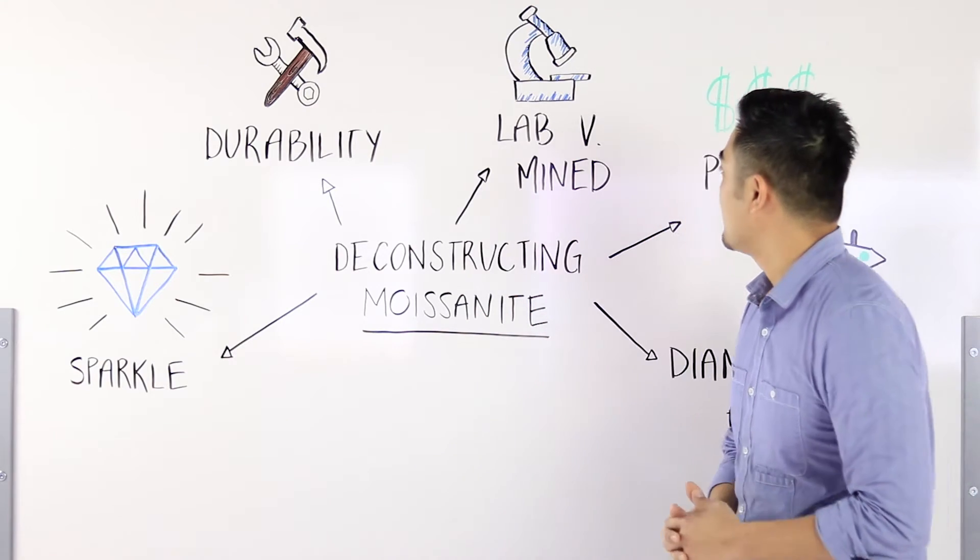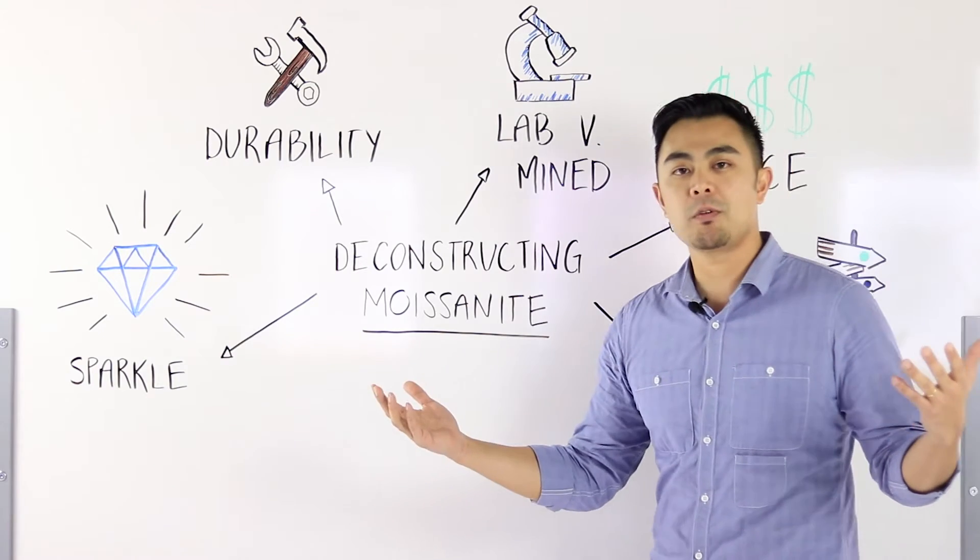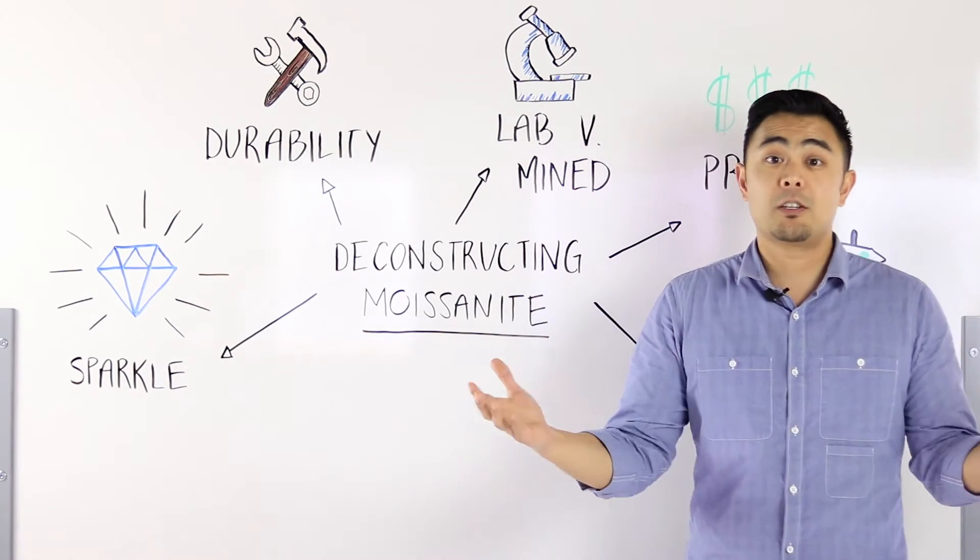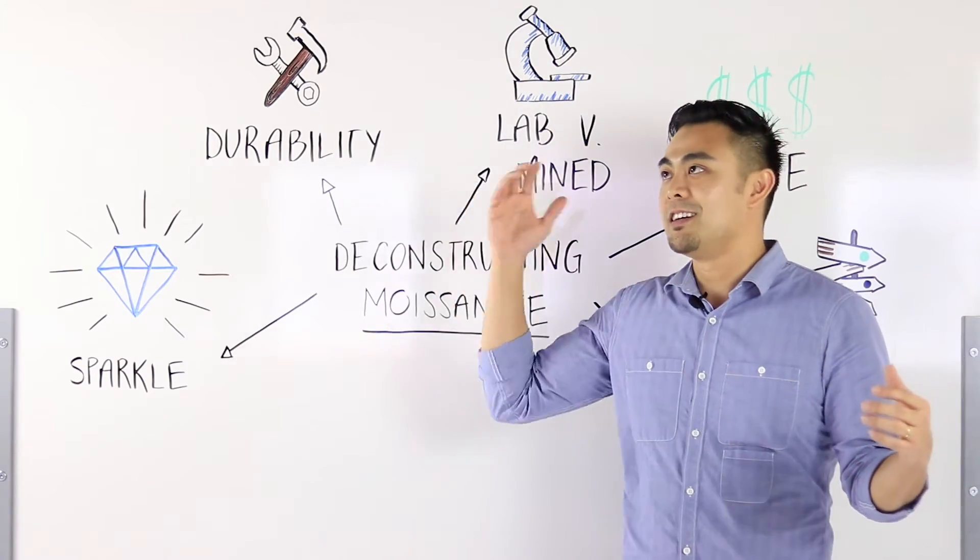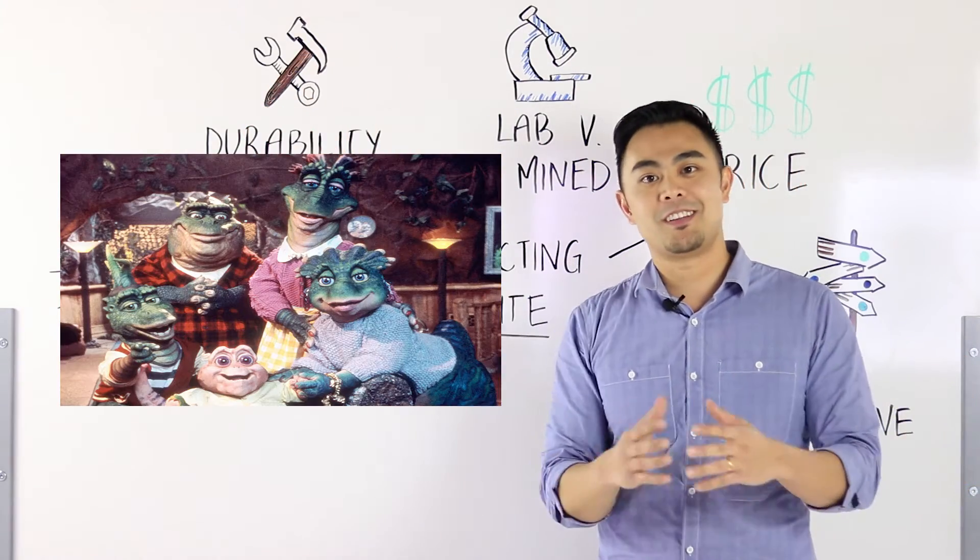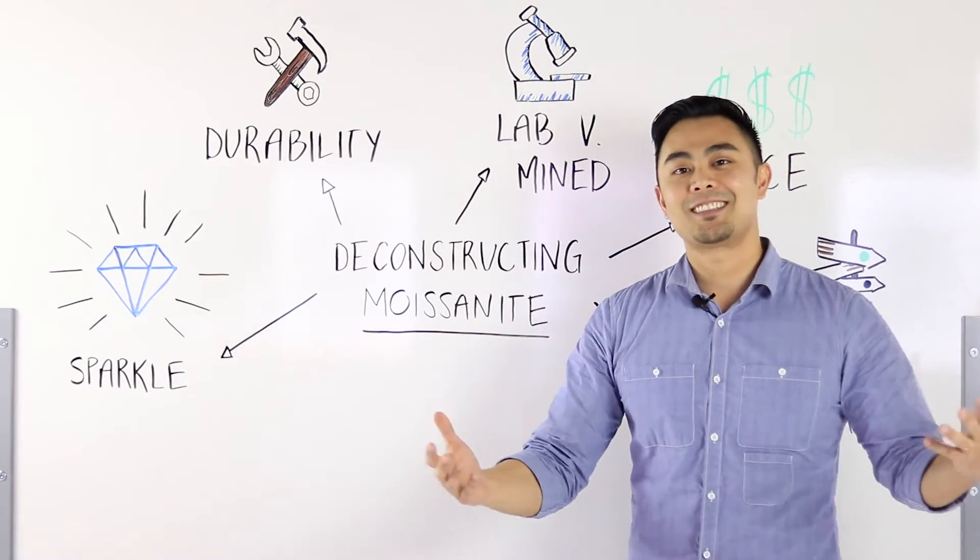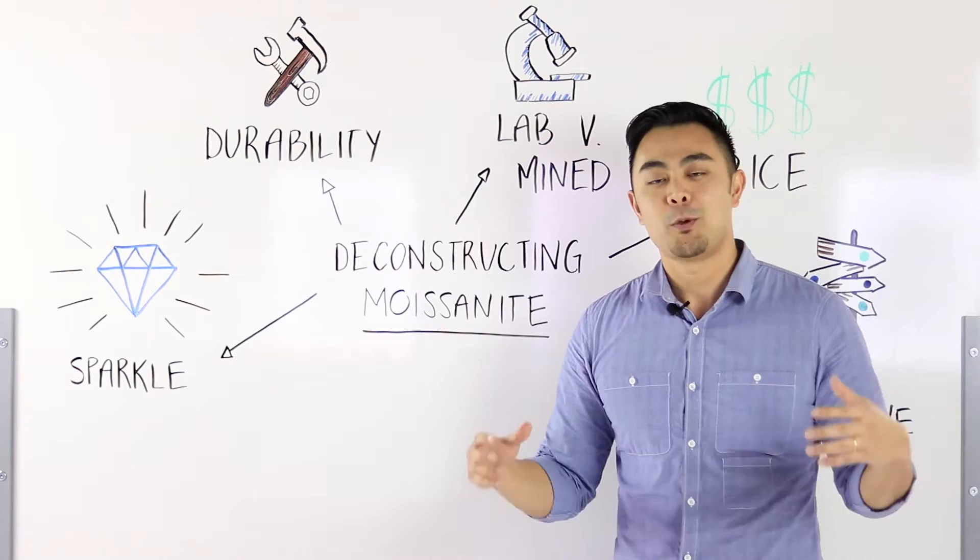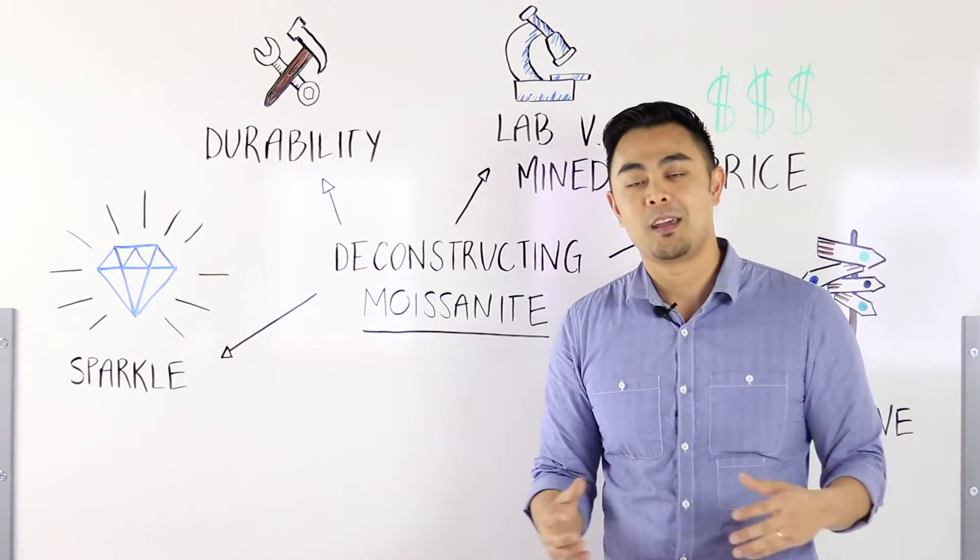The third point is lab versus mined. When people think about natural gems, it's natural for a reason. It's been there for billions of years, since the T-Rex roamed the earth, since the beginning of time as we know it. In other words, it's mined. It's a natural gem people actually have to dig and look for because it's natural.